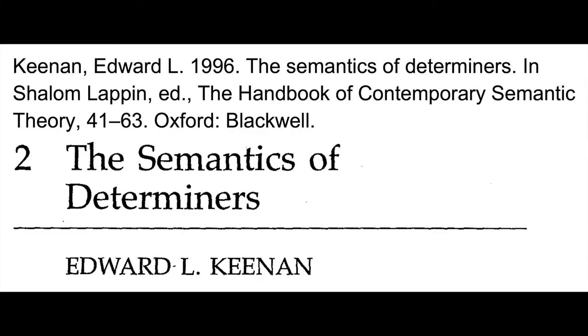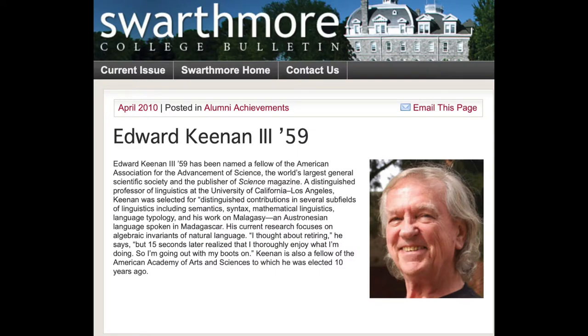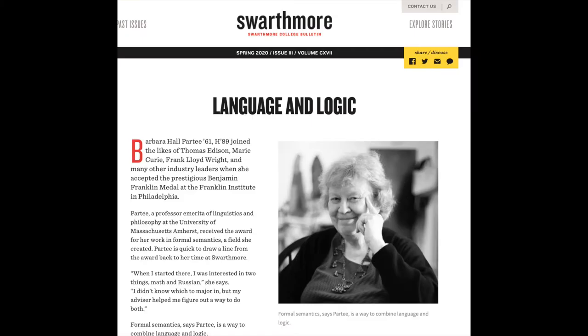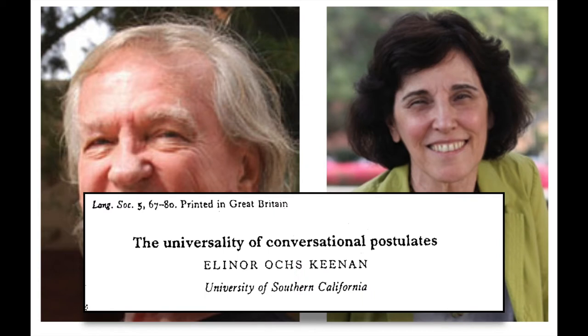Our companion reading is Keenan 1996, The Semantics of Determiners. Keenan here is the renowned linguist Ed Keenan. Interestingly, Ed Keenan is another distinguished semanticist graduate of Swarthmore College, along with Barbara Partee and David Lewis. And I should add that Ed Keenan is not the same person as the E.O. Keenan who appears later in our syllabus. That's Eleanor Ox Keenan, the distinguished linguistic anthropologist.